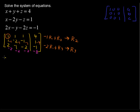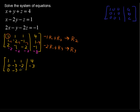Let's write the result. Row 1 stays: 1, 1, 1, 4. For row 2: we get 0; negative 2 plus negative 1 is negative 3; negative 1 plus negative 1 is negative 2; and 1 minus 4 is negative 3. For row 3: 2 and negative 2 gives 0; negative 1 and negative 2 gives negative 3; negative 2 and negative 2 gives negative 4; and negative 1 and negative 8 gives negative 9.